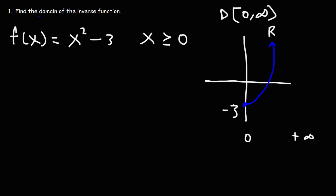The range is also restricted. Focusing on the y values, the lowest y value is negative 3 and the highest is infinity. Now keep in mind, the range of f of x is the domain of the inverse function. So the answer for this problem is negative 3 to infinity. But let's confirm that by finding the inverse function.